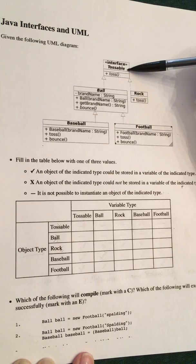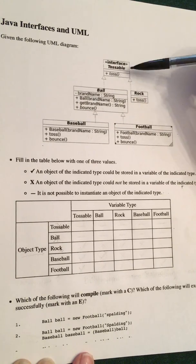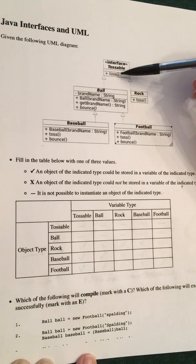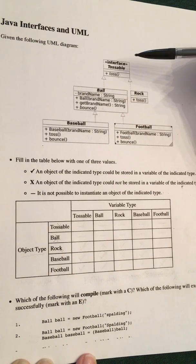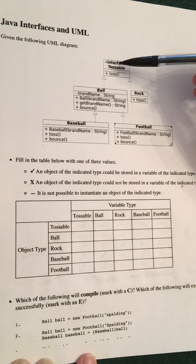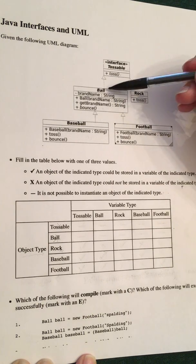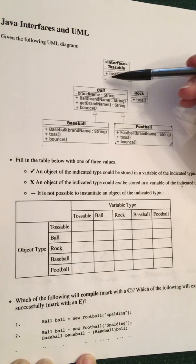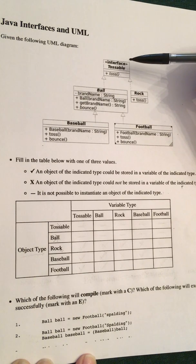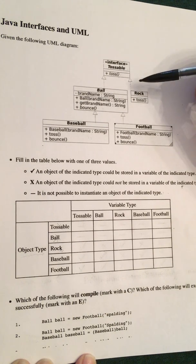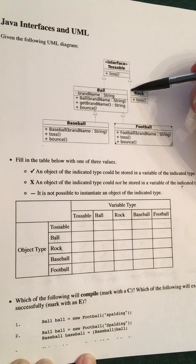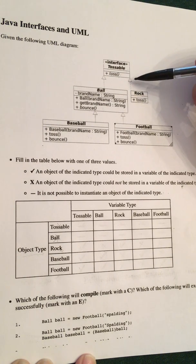This interface is named tossable. Usually interfaces are some kind of adjective — comparable is an example in the Java API — and this interface has one method named toss. It's just a simple example to get us working on this. Notice that both Rock and Ball implement tossable, and that's the keyword you'll use in the header of the class. Notice that's indicated in UML with dotted lines and an open arrowhead.